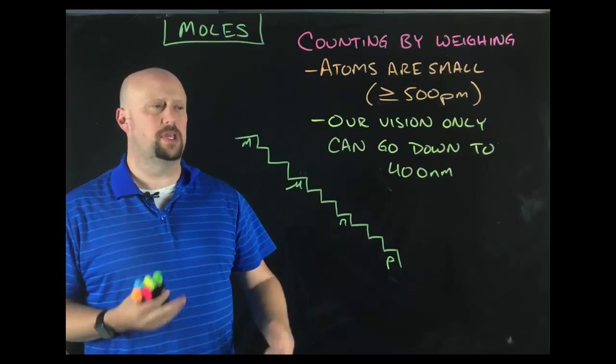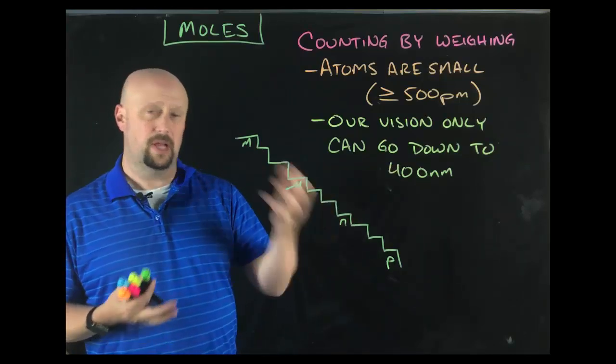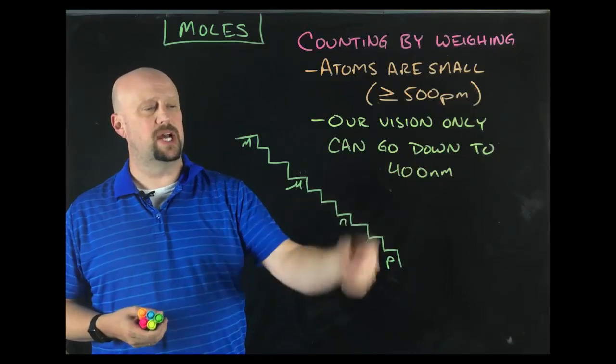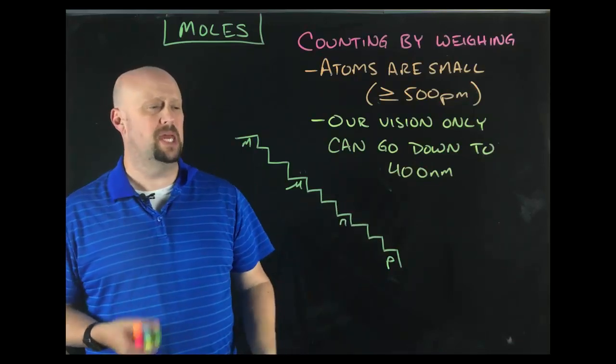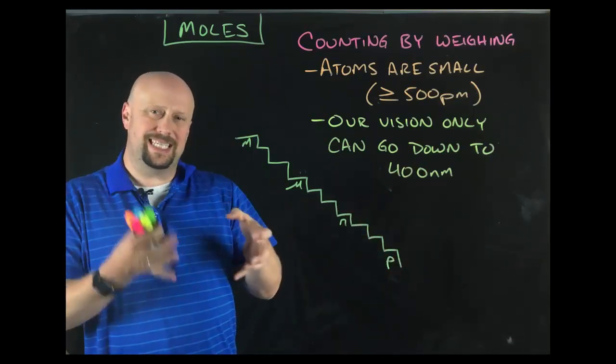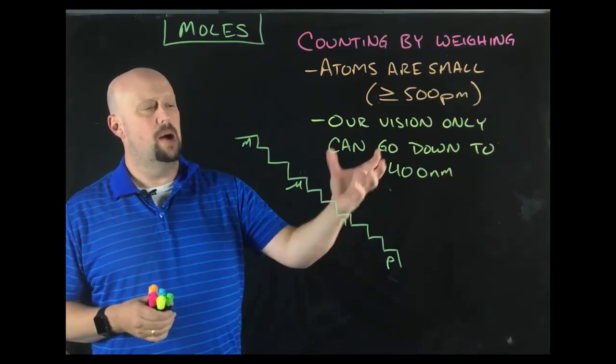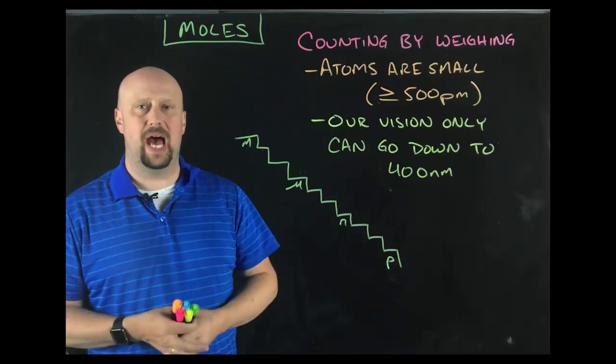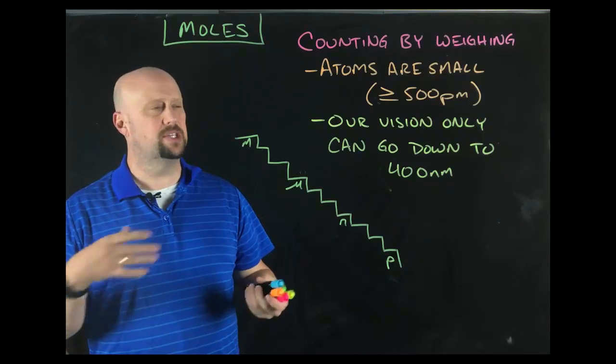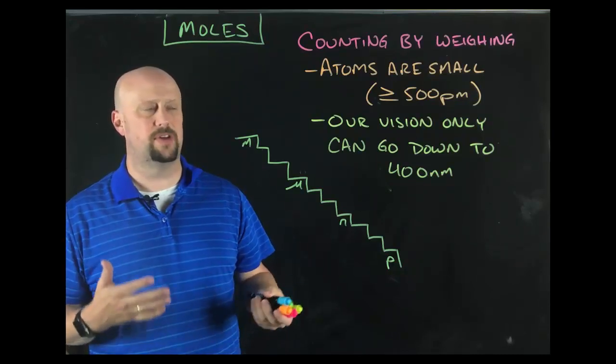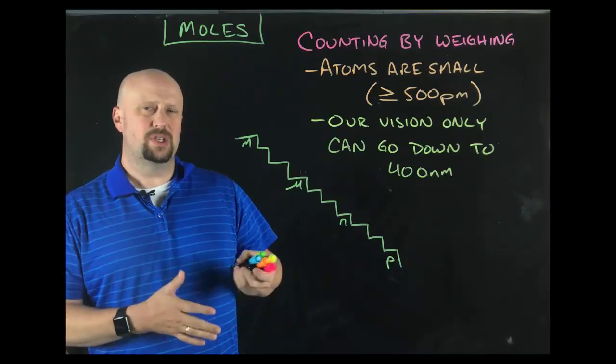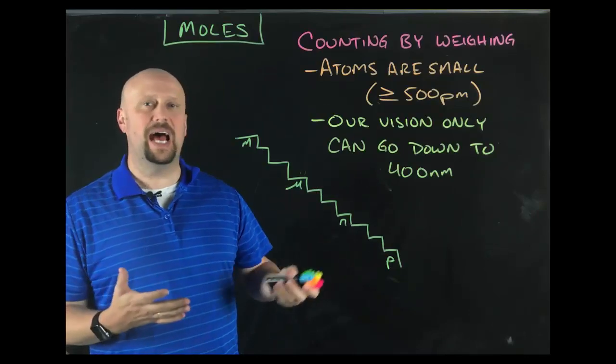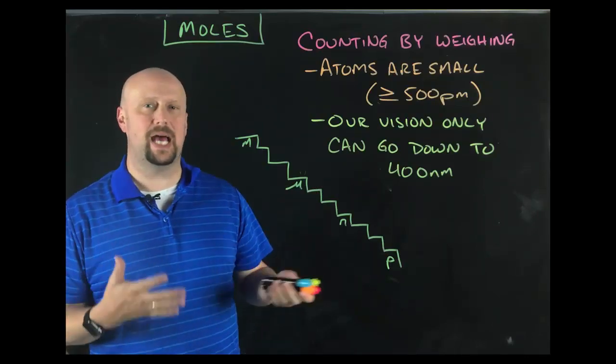And here's the other difficulty that goes along with that is that our vision, like human vision, only reaches down to about 400 nanometers. So what that means is that to be able to really see atoms, even with the strongest microscopes, we would have to have about a thousand atoms lined up together. Now there are things like electron tunneling microscopes that we can see sort of like bumps from where atoms would be, but we can't actually see atoms themselves.